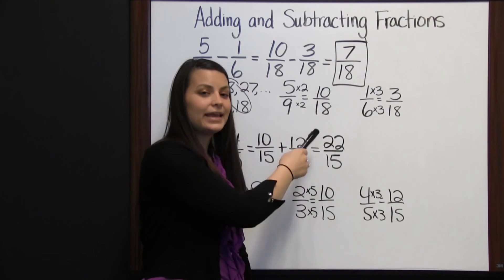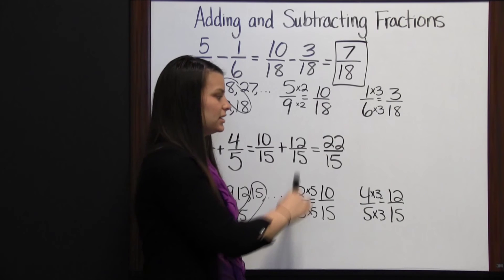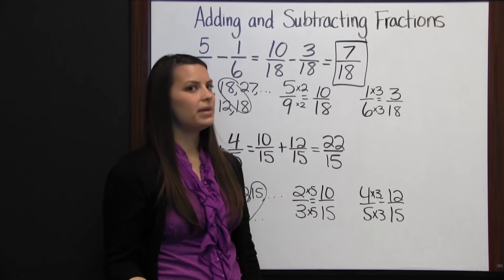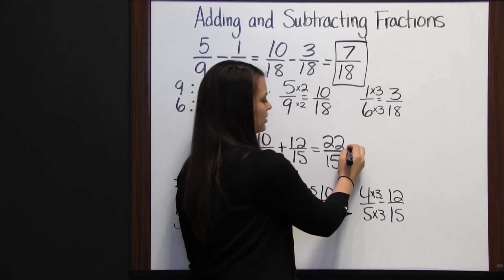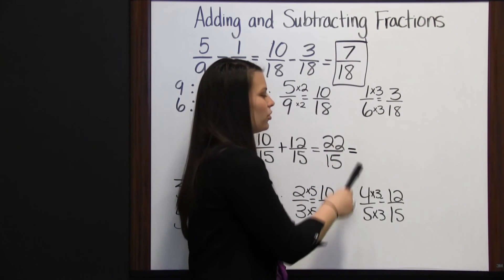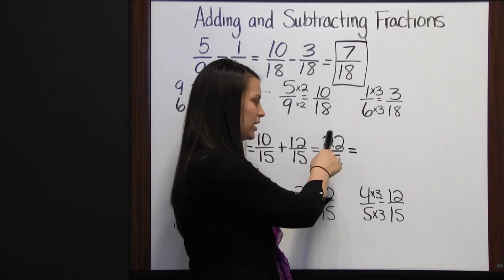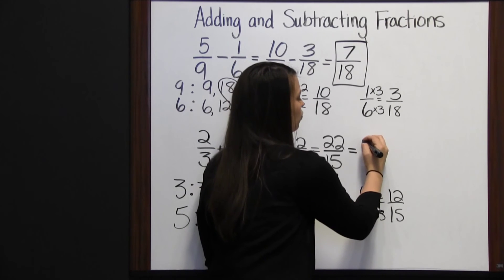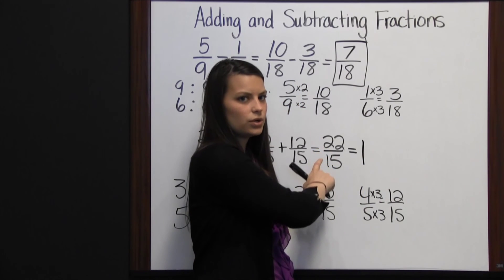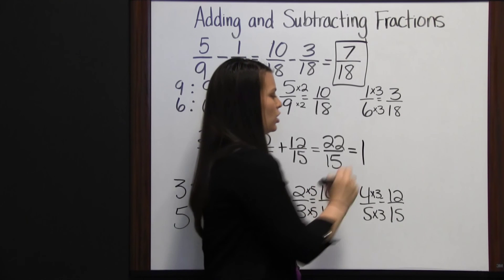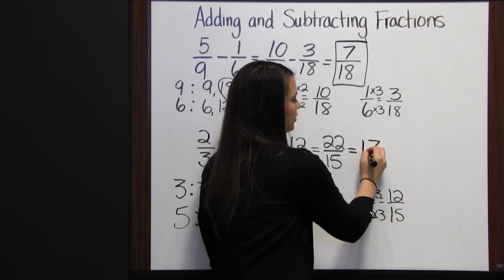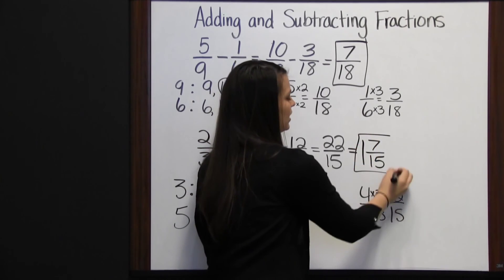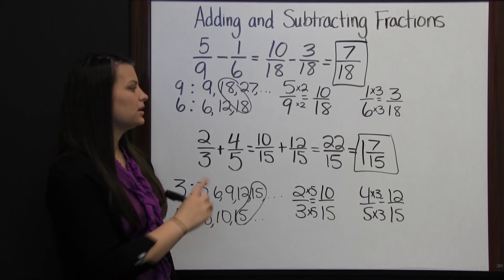And this is an improper fraction, since our numerator is larger than our denominator, so we'd want to change it to a mixed number. To change this improper fraction to a mixed number, we're going to divide our numerator by our denominator. Twenty-two divided by fifteen is one, since fifteen goes into twenty-two one time, with seven left over, and the denominator stays the same. So one and seven-fifteenths is our result.